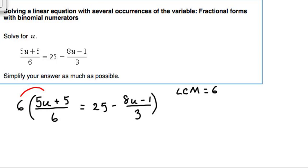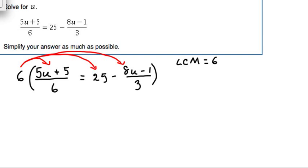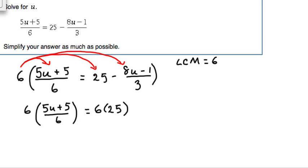We're going to take this least common multiple and multiply the entire equation by it. So the 6 is going to be distributed to (5u + 5)/6, to the 25, and also to (8u - 1)/3. So we get: 6 times (5u + 5)/6 equals 6 times 25 minus 6 times (8u - 1)/3.